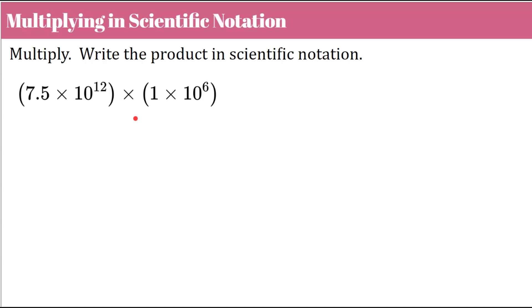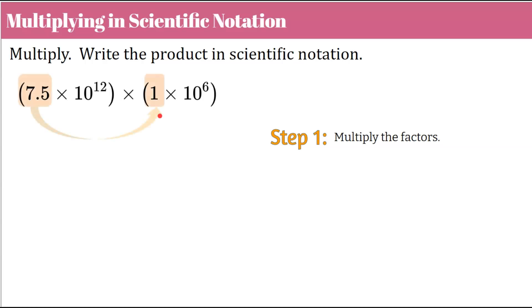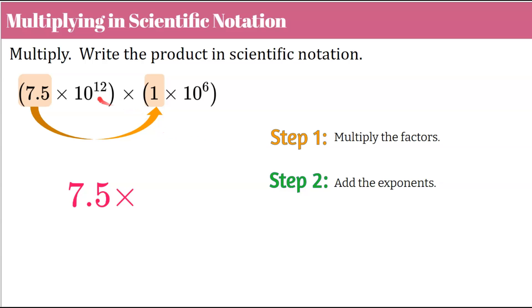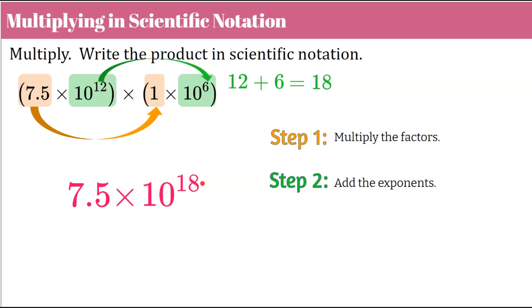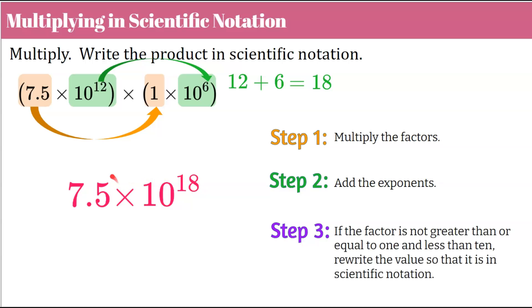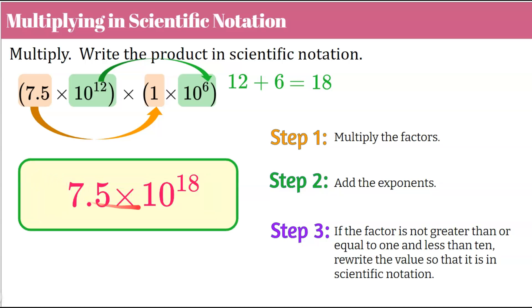Let's review multiplying in scientific notation. Step one when we multiply: multiply the factors. 7.5 multiplied by 1 — anything multiplied by 1 is itself — gives 7.5. Step two: apply exponent rules. When we multiply powers with the same base, we add the exponents. We have 10¹² and 10⁶, so 12 plus 6 equals 18. Our power is 10¹⁸. Step three: check the factor. 7 is greater than or equal to 1 and less than 10. This scientific notation value represents the product.